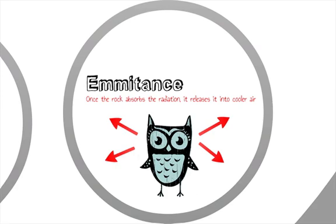Emittance is the ability of a material to radiate stored heat outward to cooler objects away from it. For example, once a rock has absorbed the radiation, it will release it into the cooler air at night.